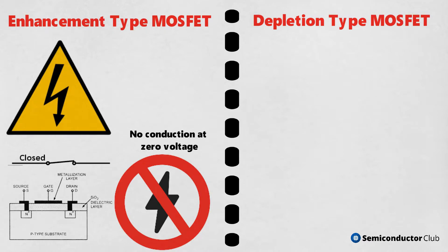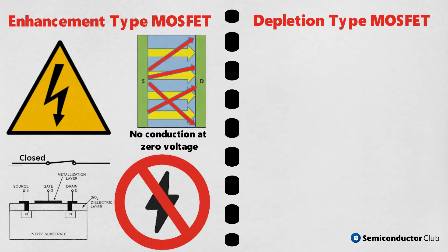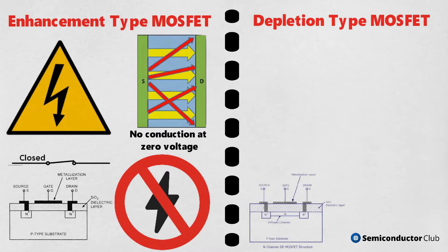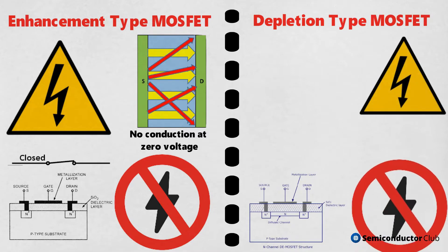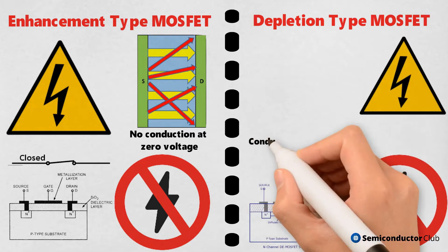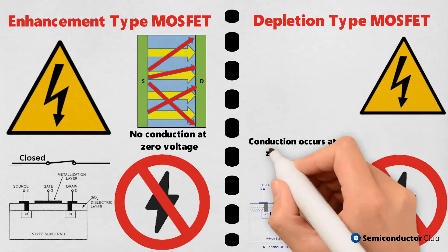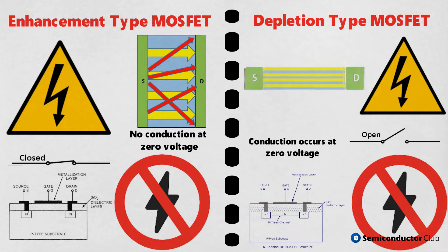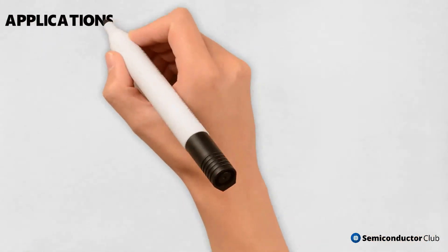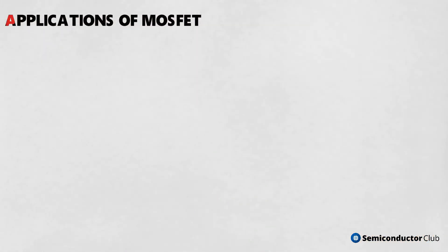A wider channel is thus established. In depletion type MOSFET, the channel is already established and conduction occurs even at zero voltage; it is open or on by default. Unlike enhancement type, here the channel is depleted of charge carriers to reduce the width of the channel.